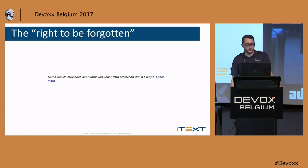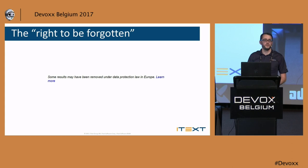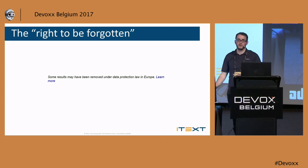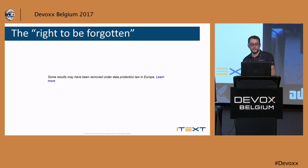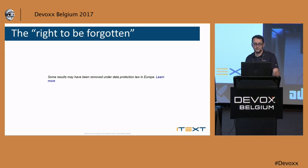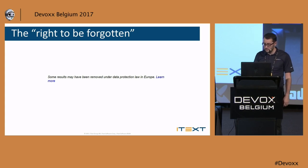This ties into the 'right to be forgotten' — a very nice catchphrase that sells articles. You might remember court cases a few years ago against Google where people wanted articles about them removed. There was a guy who wanted an article about his missed mortgage payments removed from Google, and Google had to comply. That's basically why you now see a notice at the bottom of every Google search. It doesn't mean anything has been removed — they're just covering themselves with a blanket statement.